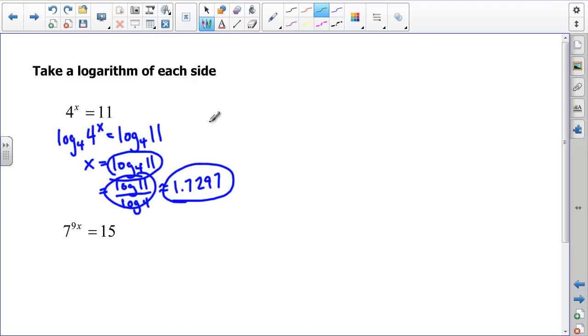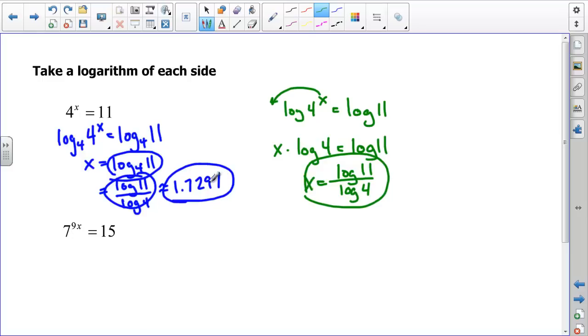Since we don't always have an Inspire that can do that, one of the other things I could do is just take the common log or natural log of 4 to the x and the common log or natural log of 11. And then what happens with an exponent? It comes out front. Let me say x times log of 4, and that's equal to log of 11. Since it's x times log of 4, I can just divide both sides by log of 4 and again get log of 11 over log 4. That's our exact answer. Plug it into your calculator and you're going to get 1.7297.